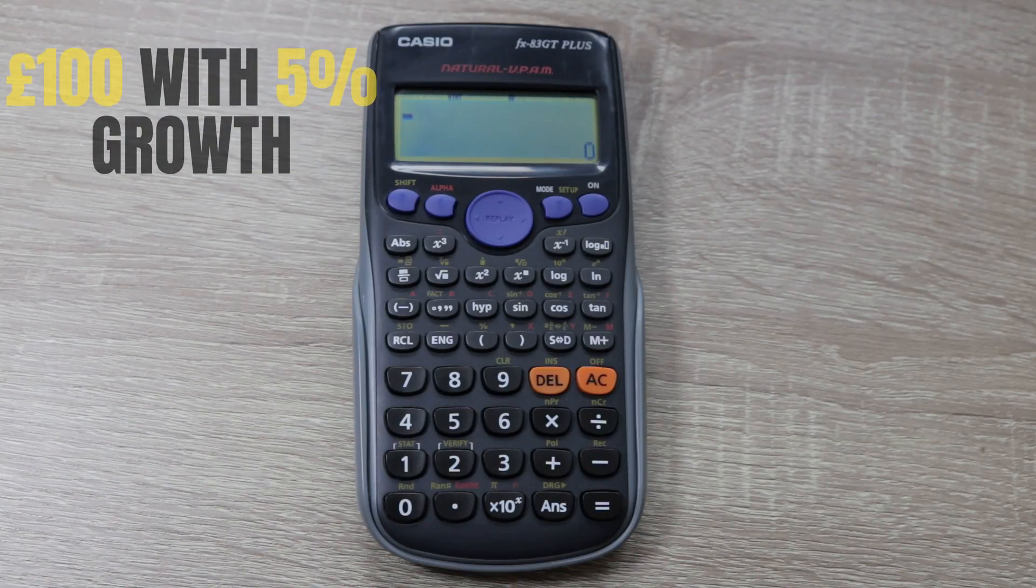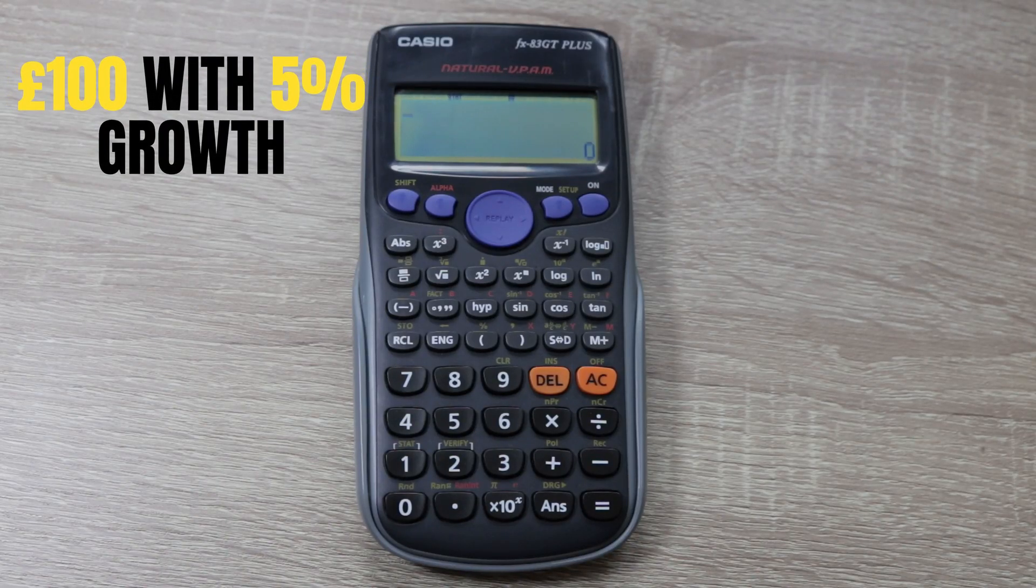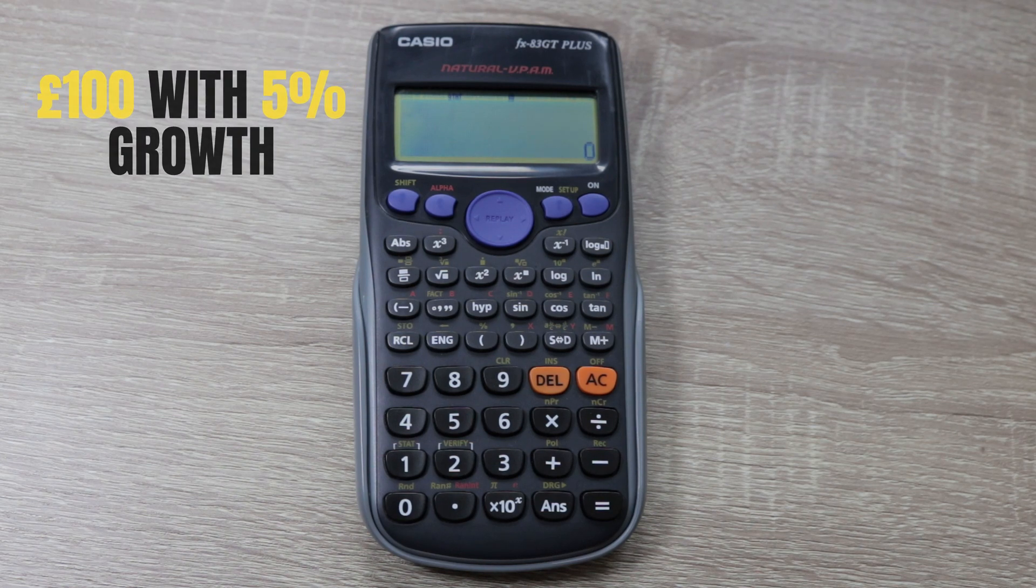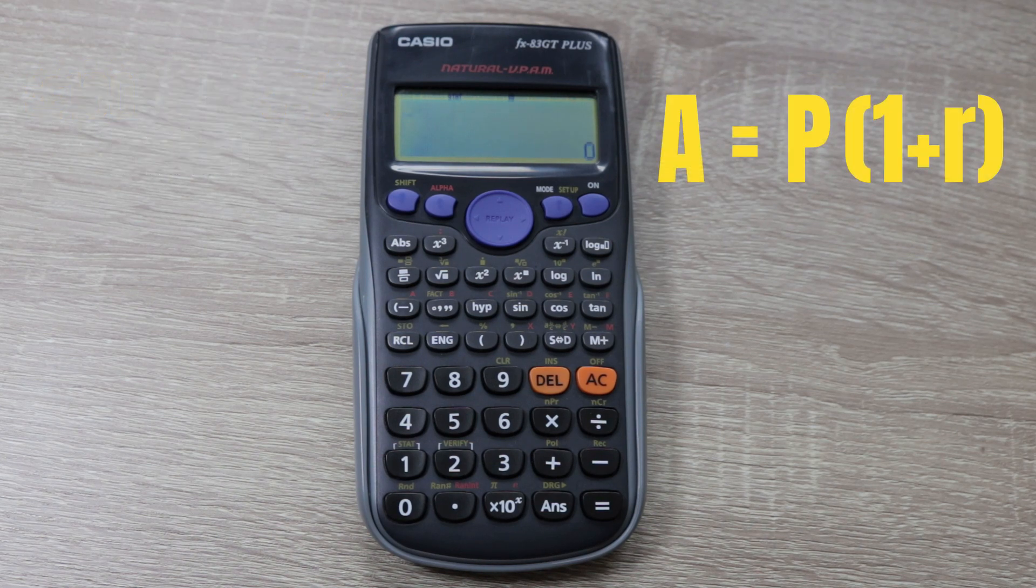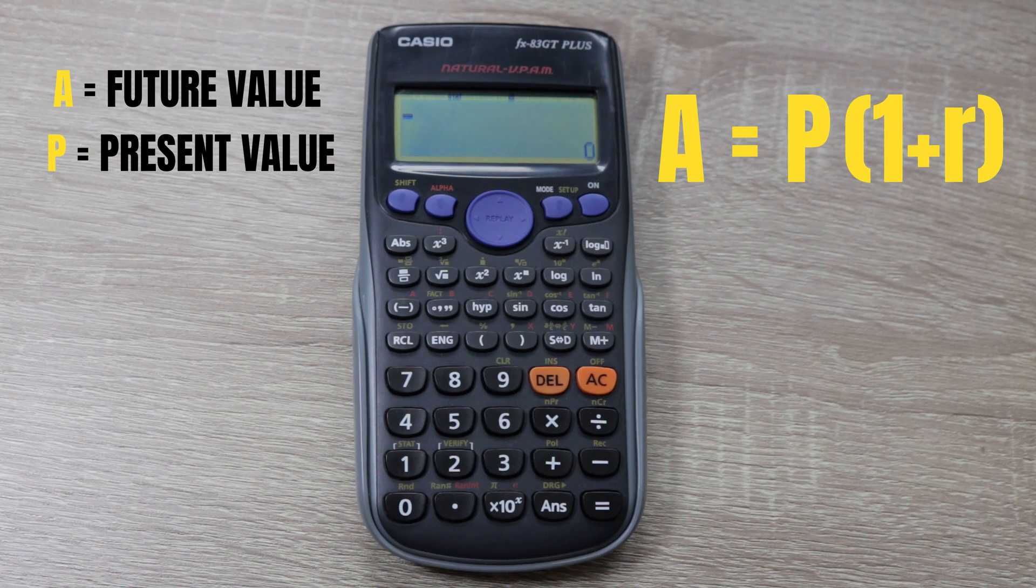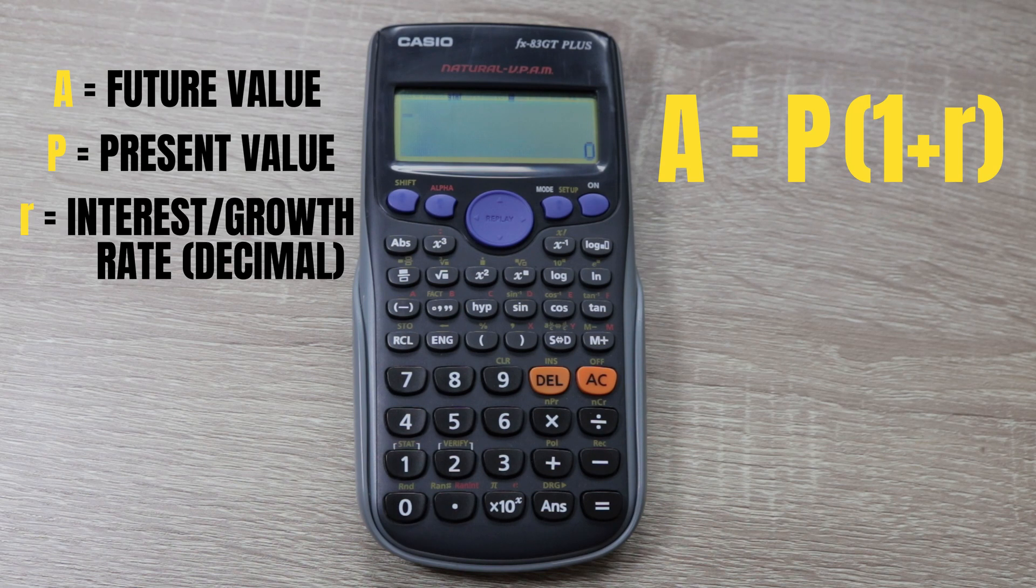We'll start with a really simple calculation, a percentage of our present value. The formula is A equals P, then in brackets 1 plus R. A being the future value, P being the present value or principle, and 1 plus R, R being the interest rate.